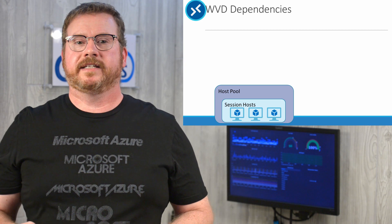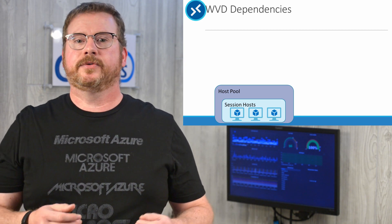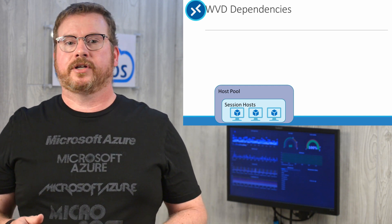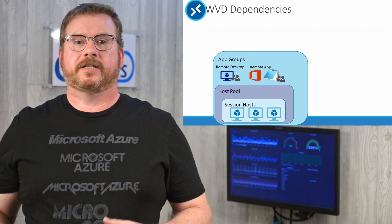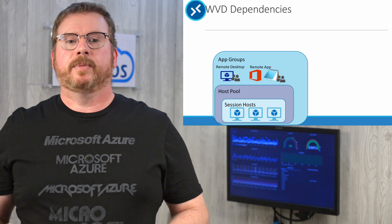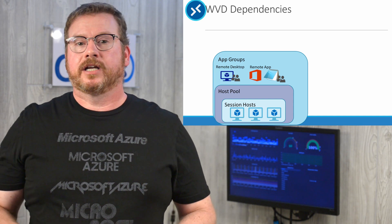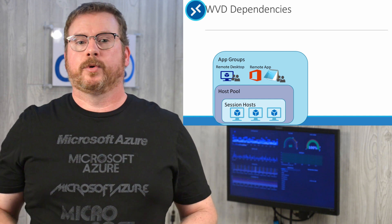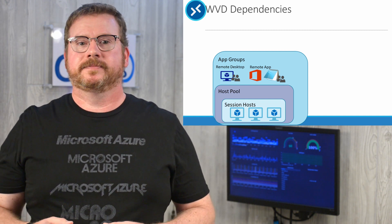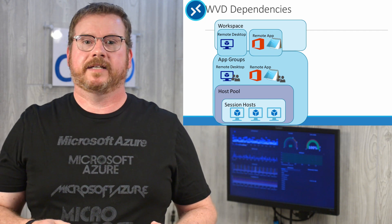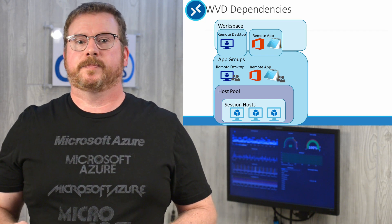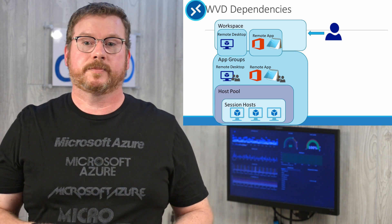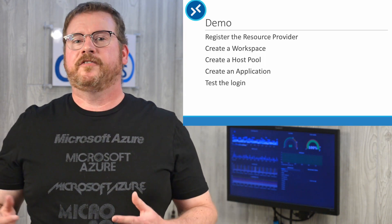Let's talk about how these fit together. A host pool contains session hosts — nothing new there. You can create an empty host pool and add session hosts later, or create the session hosts when you deploy the host pool. Application groups are dependent on host pools. There can be one remote desktop application group and one or more remote app groups, and each remote app group can contain multiple applications. Application groups have to be registered with a workspace. Users interact with the workspace and can be granted access to the application group, but the application group still needs to be assigned to the workspace before it's available to the user.